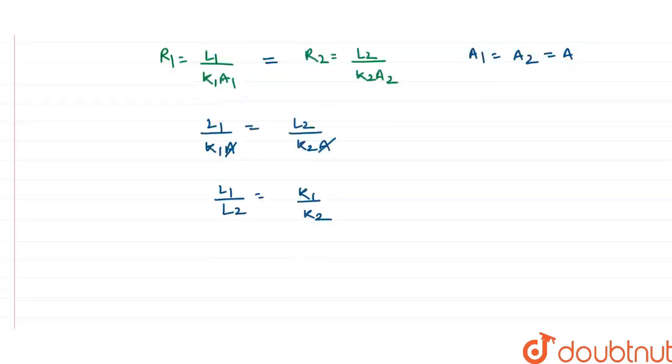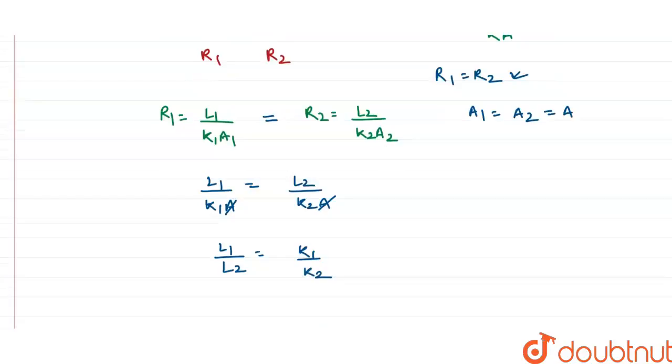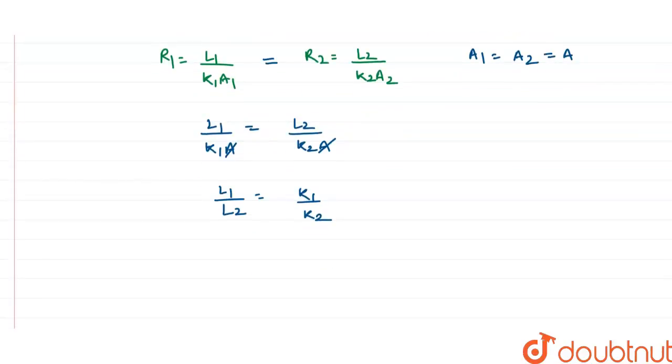The ratio k1/k2, which is the thermal conductivity, is given in the question as 5:3. So the ratio of lengths is also 5:3. Okay, so this is the answer. Thank you.